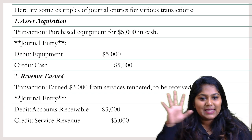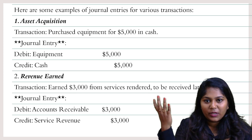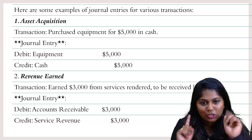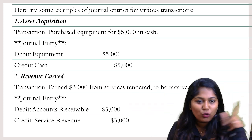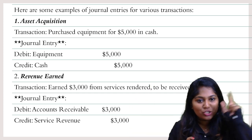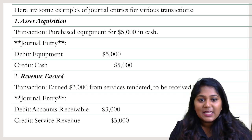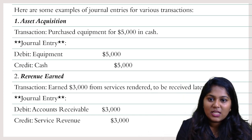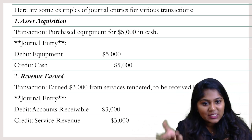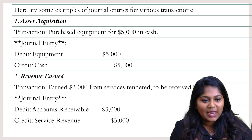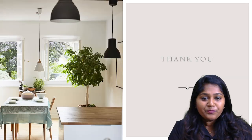Let me finish with some journal entry examples. First: purchased equipment for $5,000 in cash. Equipment is an asset — it is increasing, so debit equipment. Cash is also an asset — it is decreasing because you are paying out, so credit cash. Second: earned revenue of $3,000 but payment is to be received later. Accounts receivable is an asset that increases — debit accounts receivable. Sales is income that increases — credit sales.